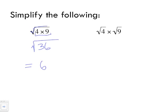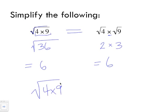Now looking at this next example, it looks like a completely different question but in fact it's another way of writing the same two statements — they're both exactly the same. The square root of four is two, multiplied by the square root of nine which is three. Two times three gives six. So another way of writing the square root of four times nine is to write them as separate radicals and vice versa.